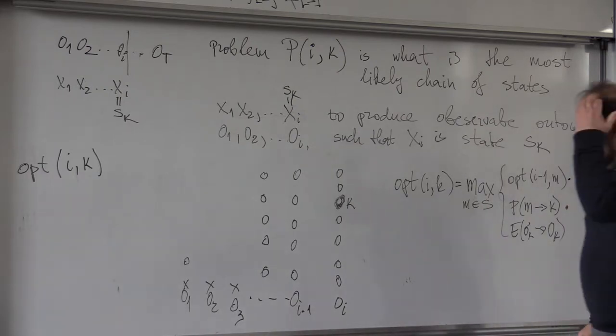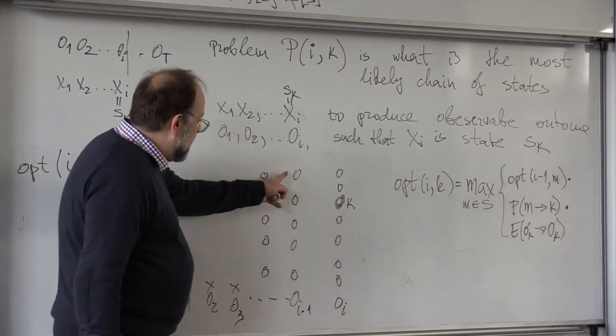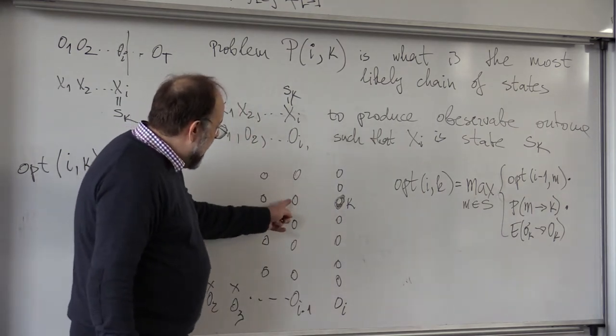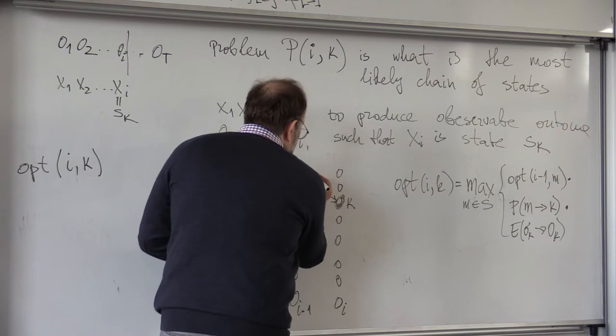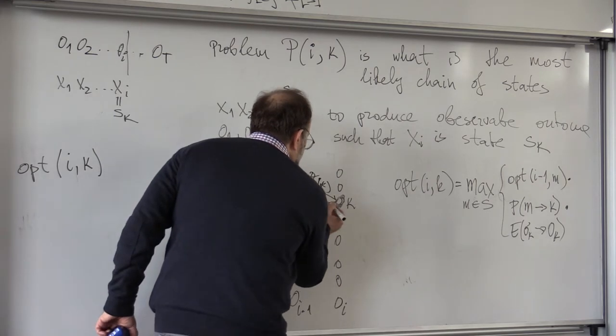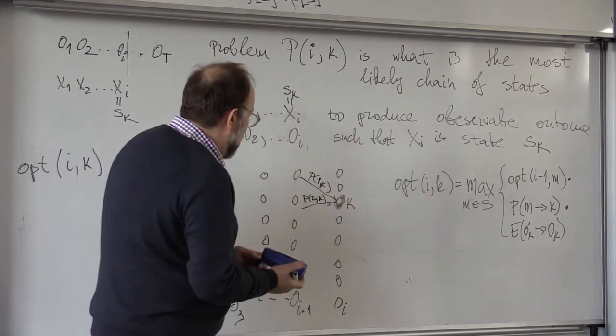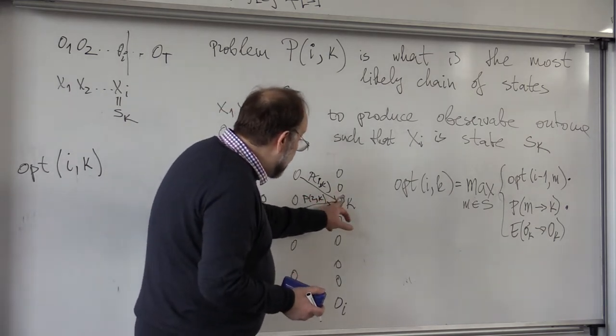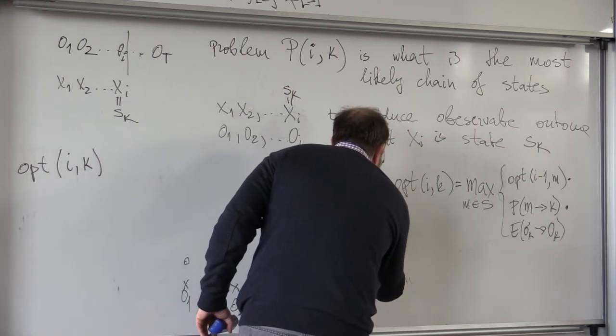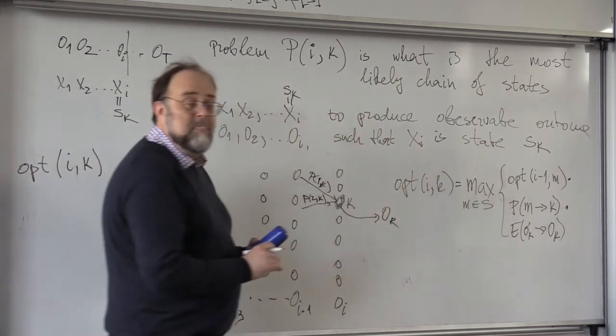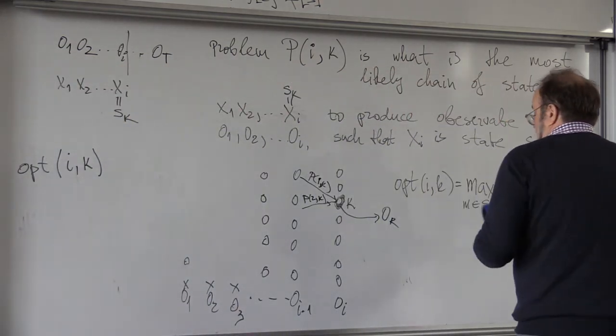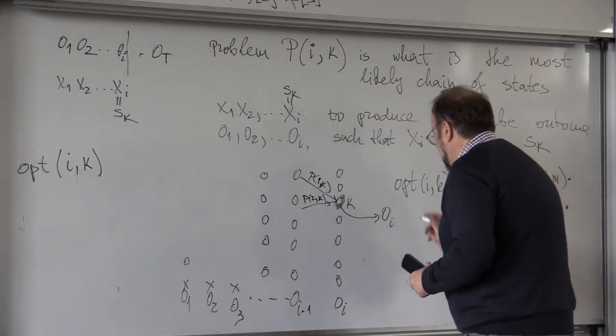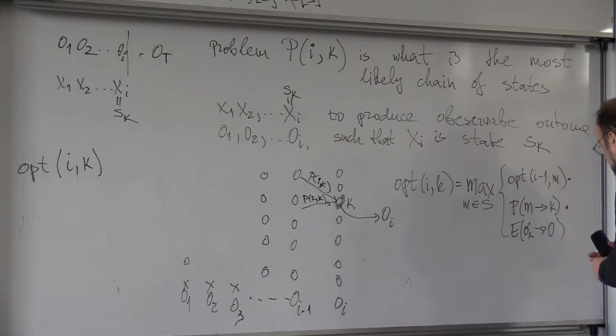You look at all probabilities, optimal probabilities, to end to one of these states, then you multiply that with probability, say, from state 1 to transition to K. Here, it will be probability from state 2 to transition to K, and so forth. And then you multiply this with probability from this state to achieve observable O-K, which is the observable O-I, the I-th observable. So this is the I-th observable.